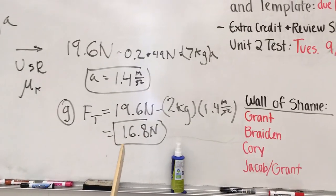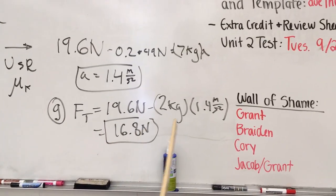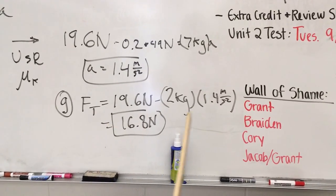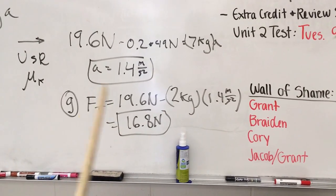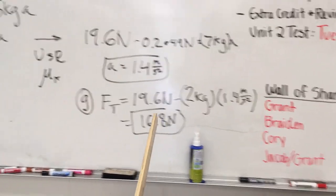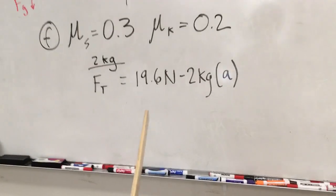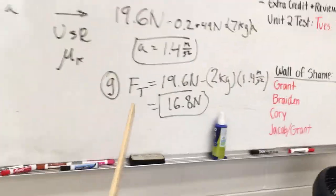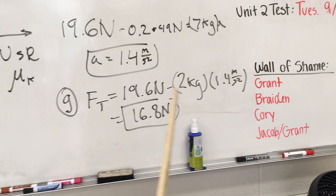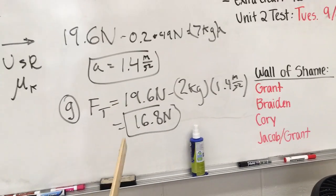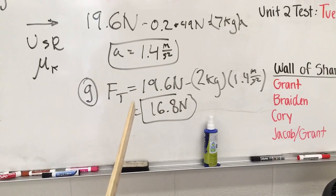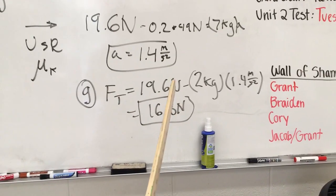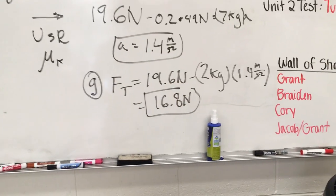Part G asks us to find the overall force of tension with friction taken into account. Plugging the new acceleration back into the two kilogram tension equation, we find that the force of tension has now gone up to 16.8 Newtons. And that's the whole problem.